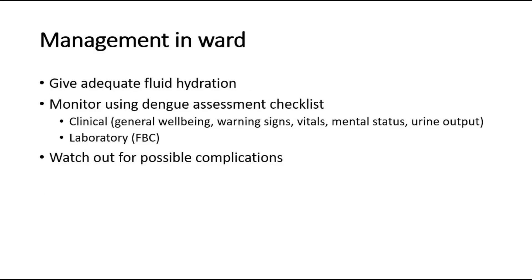For management in the ward, provide adequate fluid hydration and frequent monitoring using the dengue assessment checklist, which includes clinical and laboratory parameters. Clinically, check the patient's general well-being, look out for warning signs, check vital signs, mental status, and monitor urine output. For laboratory monitoring, do full blood count to check white cell count, platelet, and hematocrit levels. Also watch out for complications such as bleeding, hepatitis, cardiac complications like arrhythmia and myocarditis, neurological complications like encephalopathy, and renal complications such as acute kidney injury due to acute tubular necrosis, which can result from prolonged hypotension or DIC.